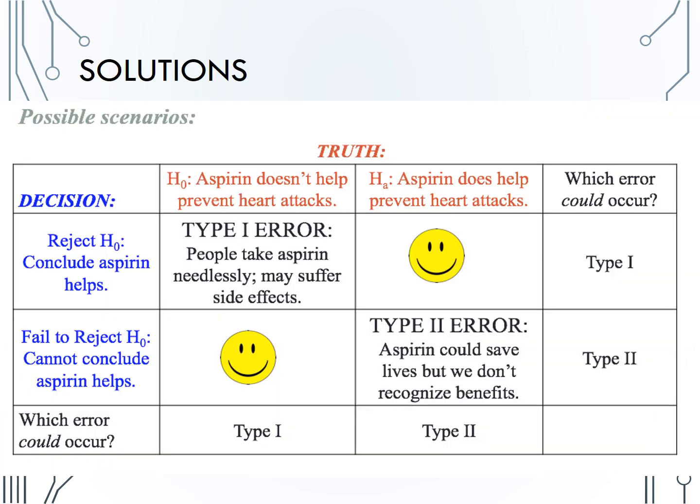The observational units here are the physicians that we collected data from. We collected two variables from each physician: whether they used aspirin or not, and whether they had a heart attack or not. The null hypothesis is that aspirin doesn't help prevent heart attacks, and the alternative is that aspirin does help prevent heart attacks. Our decisions would either be to reject the null and conclude that aspirin does help prevent heart attacks, or fail to reject the null and conclude that aspirin does not help prevent heart attacks. A type 1 error would be telling people to take aspirin even though it doesn't help them. A type 2 error would be concluding that aspirin does not help even though it does, in which case aspirin could be saving lives even though we don't recognize the benefits.